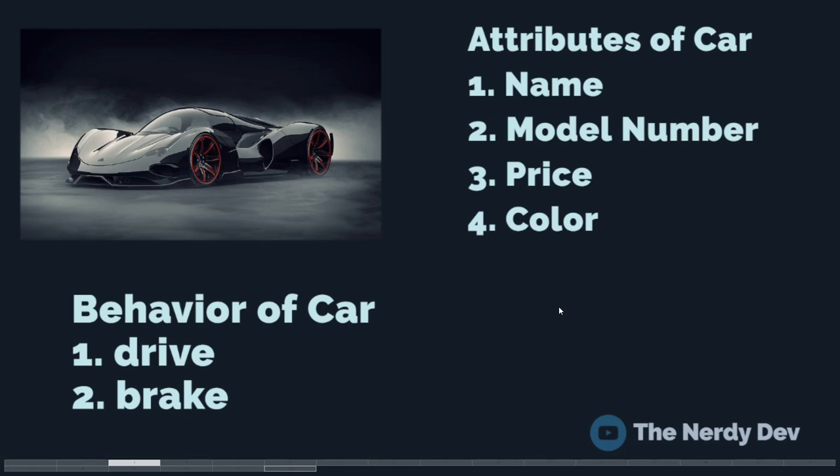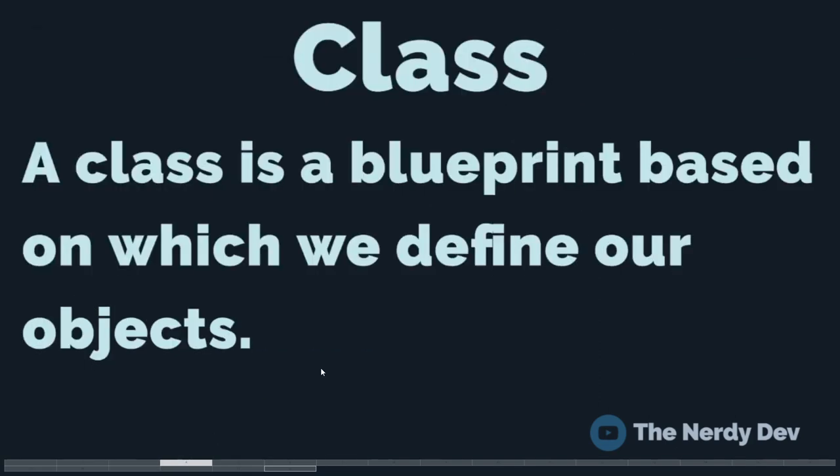The main focus of OOP is to create reusable code, and this concept is also known by the term DRY, which stands for Don't Repeat Yourself. Now let us learn about a topic closely connected to object-oriented programming: classes. A class is a blueprint based on which we define our objects.